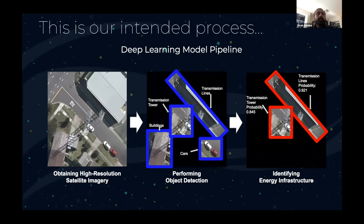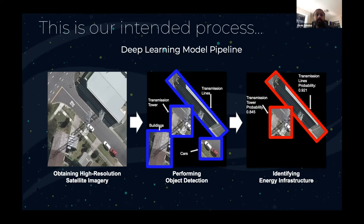Our existing methodology is to use convolutional neural networks, a kind of deep learning model, to identify energy infrastructure in satellite images. The first step is to obtain high-resolution satellite imagery, in which various infrastructure such as buildings, cars, and towers are clearly visible. Using low-resolution images won't give higher prediction accuracy. The second step is to use the model to detect different objects in the training dataset, such as transmission lines and towers, in addition to cars and buildings. The identified objects are bounded by blue boxes. Finally, the model is tested on new images, where each identified object, shown in red boxes, is assigned a probability score of belonging to a certain class.